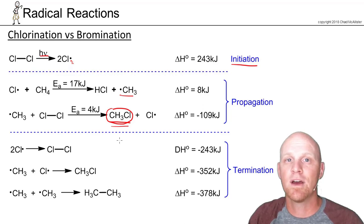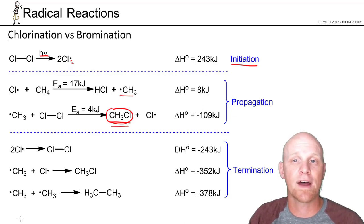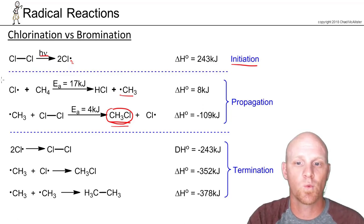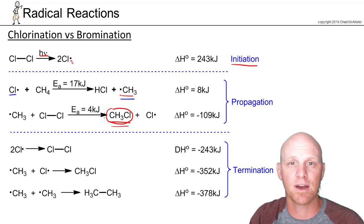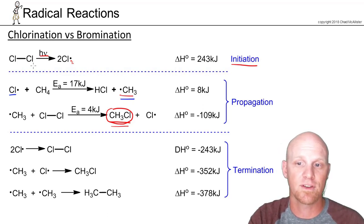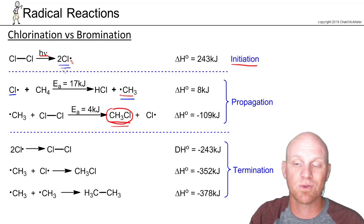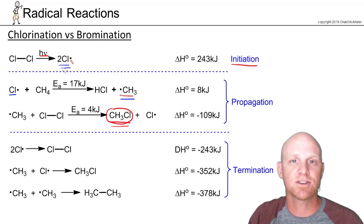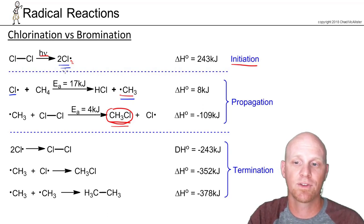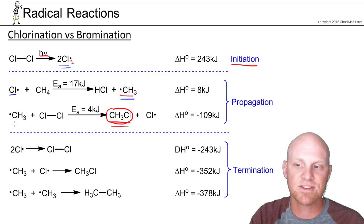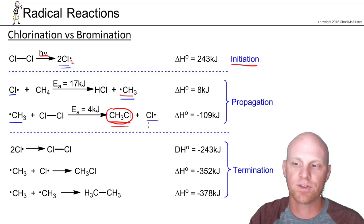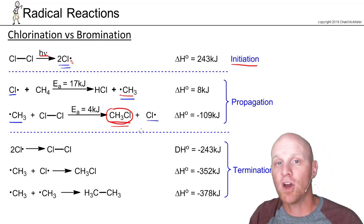In the propagation steps, you never get an increase or decrease in the number of radicals present. We start with a radical in the first propagation step and end with a radical — so the overall concentration of radicals stays the same. In the initiation step, we didn't have radicals and then we formed two, so initiation generally increases the concentration of radicals. The same holds for the second propagation step: one radical in, one radical out.